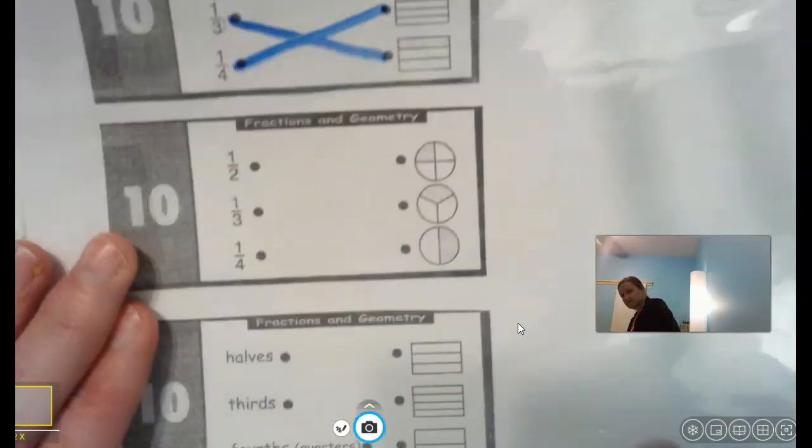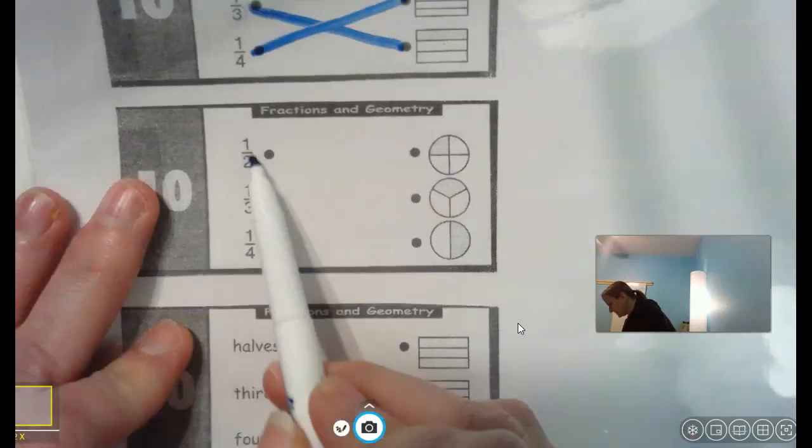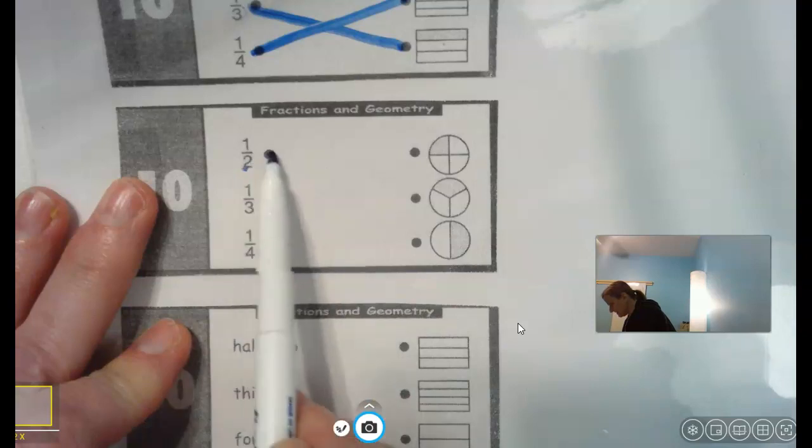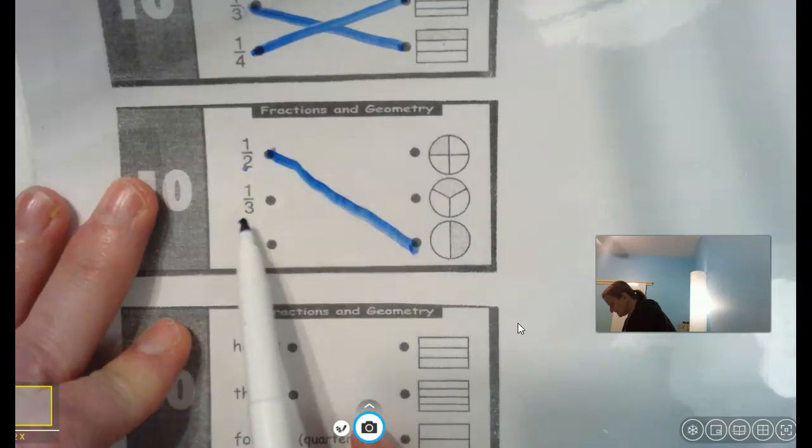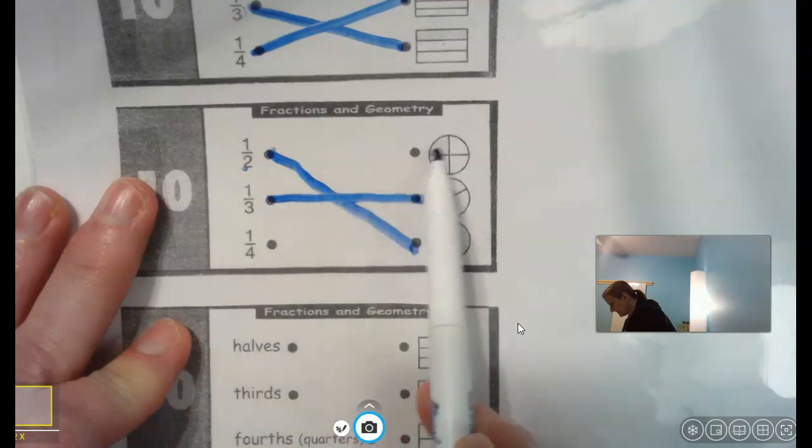Again, we're back to a circle. Which one is cut into two equal parts? The two is on the bottom there. Which one is cut into three equal parts? And which one is cut into four equal parts?